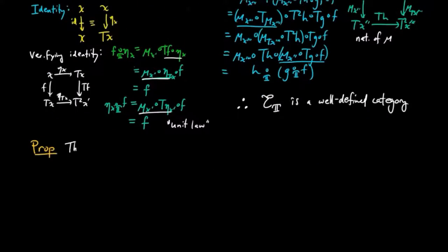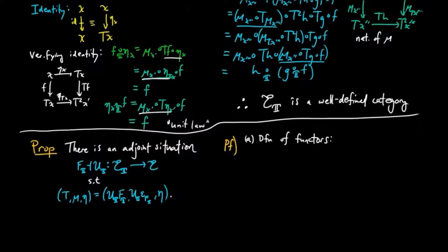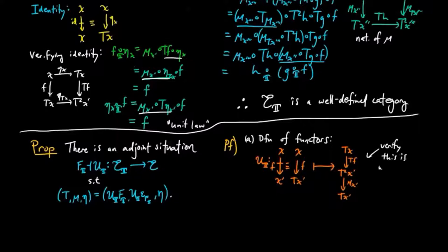Now we are ready to prove that there is an adjoint situation F_T left adjoint to U_T from the Kleisli category to its underlying category E, such that this adjoint situation induces the monad T. For the proof, we first need to define the forgetful functor and the free functor. The forgetful functor will take the Kleisli category object X to TX, and the morphism F to the E composite TF followed by the multiplication of the monad.